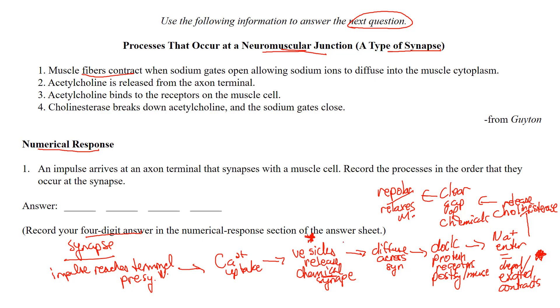Acetylcholine binds to receptors - well that's right here. So that's a little bit further down. And cholinesterase breaks down acetylcholine - that's kind of the last step. So you can see, once we have this flowchart, it's pretty easy to put these things in the correct order.